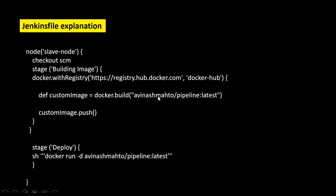In this step I am building the Docker image using the Dockerfile, and my Docker Hub repository is 'avinashmatho/pipeline' which I made public, giving it the tag 'latest'. You can also use the build number as the tag using the syntax dollar sign curly braces with 'BUILD_NUMBER' inside. Then 'customImage.push()' will build and push the custom image to the Docker Hub repository. Finally, under the stage called 'deploy', I am deploying a container using this customized Docker image, pulling directly from the 'avinashmatho/pipeline' repository.